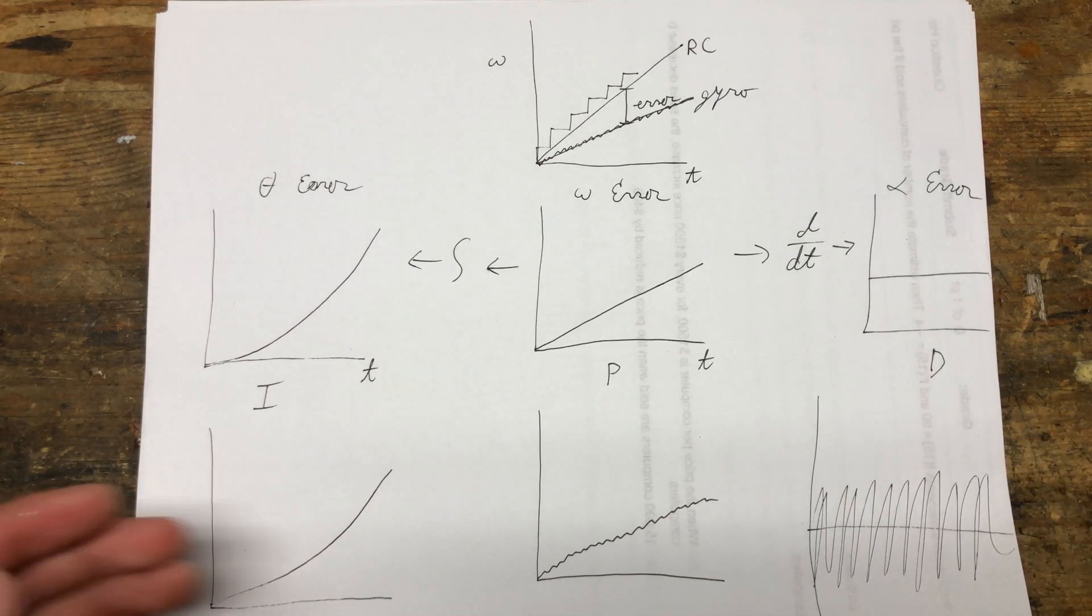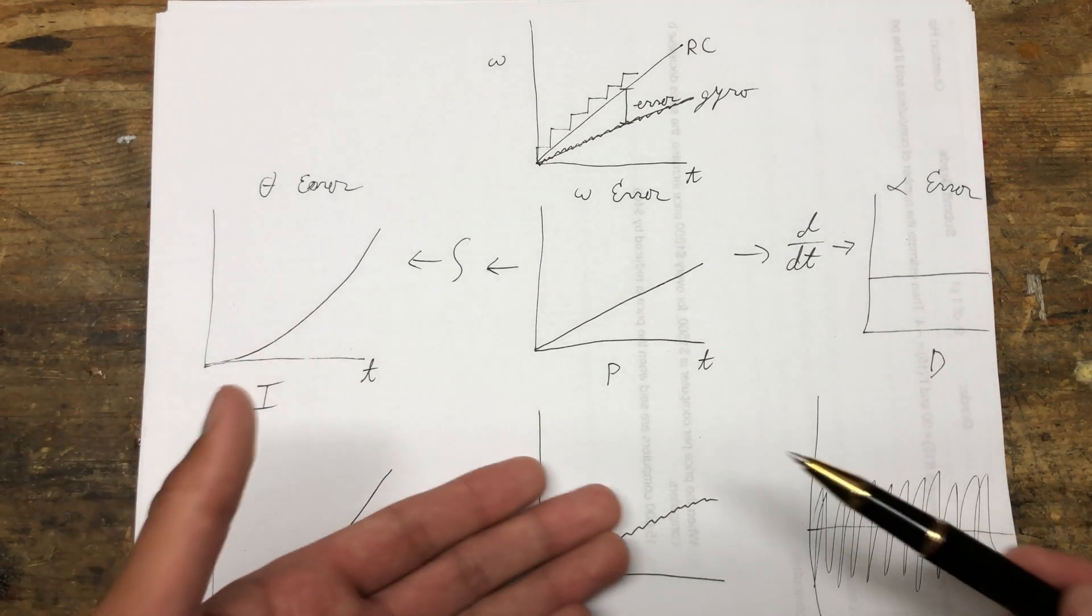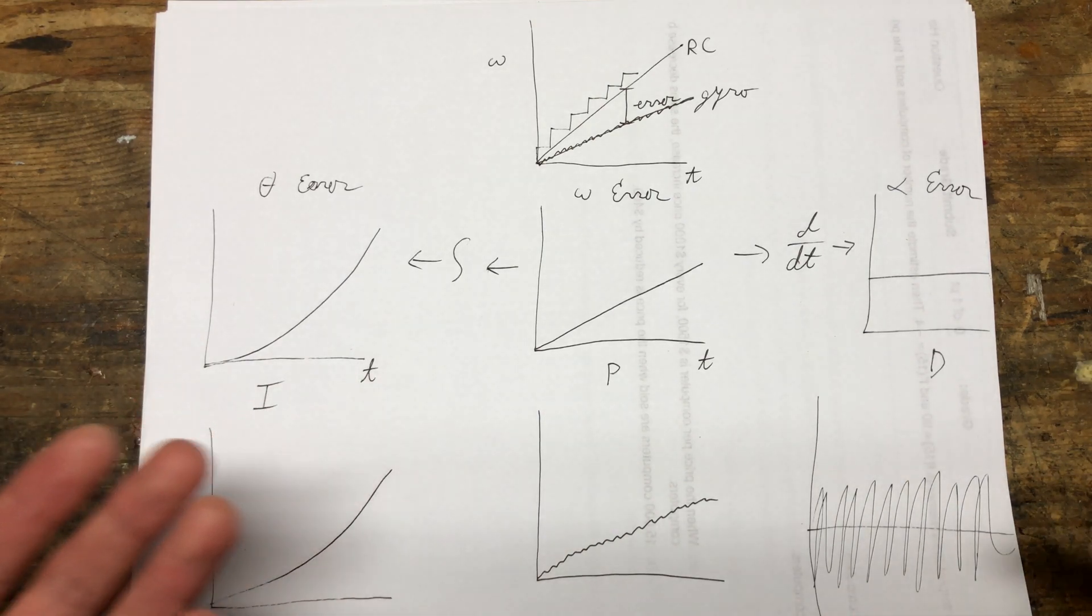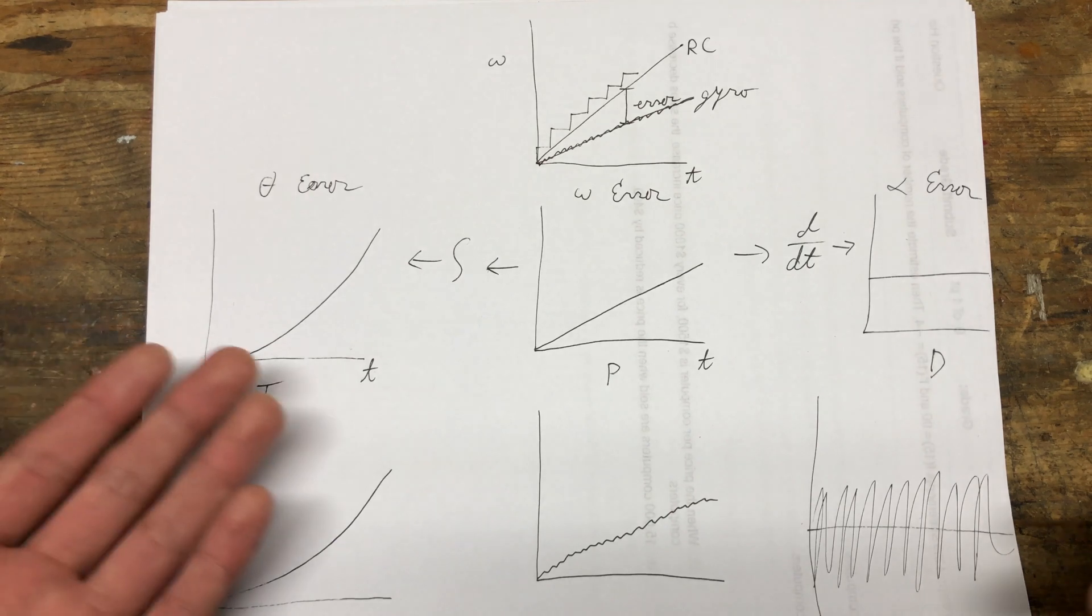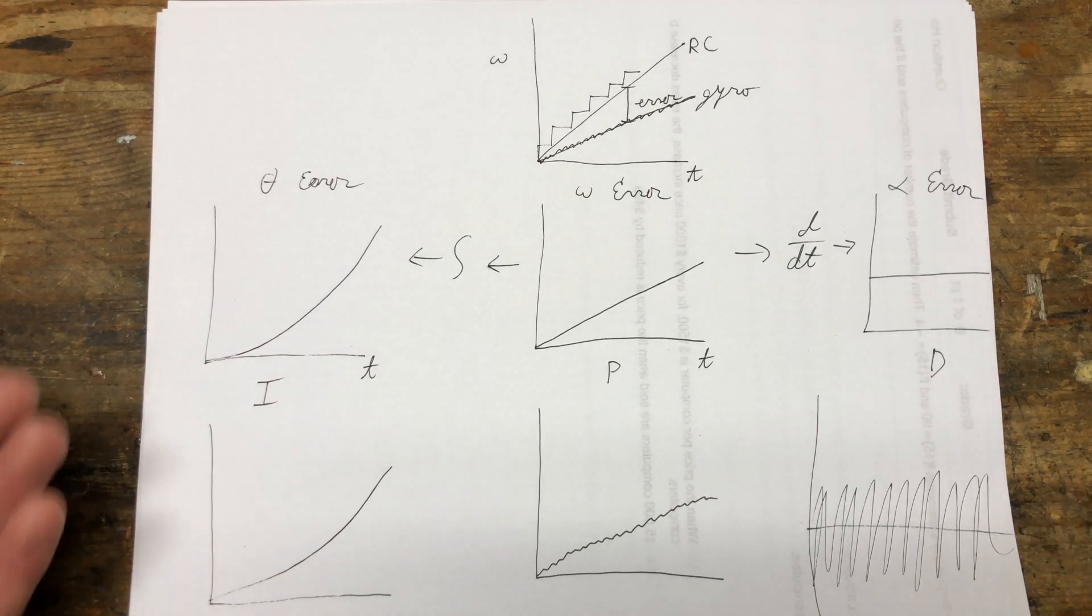So you may be thinking, why not just run a low D-gain value so that the amplification of noise is very low, and you just don't have to worry about smoked motors? In reality, this is what a lot of people do. The Betaflight defaults, for instance, are very conservative.